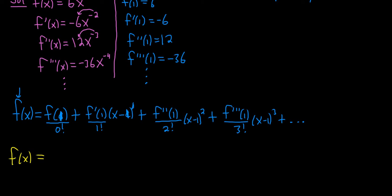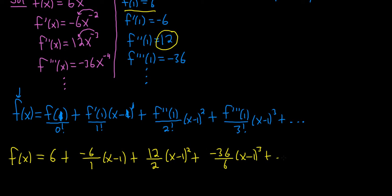So here's where we're going to hope to find a pattern. f of 1 is 6, so it'll be 6 plus f prime of 1 is negative 6, so it'll be negative 6 over 1 factorial times x minus 1 to the 1. f double prime of 1 is 12, so plus 12 over 2 factorial times x minus 1 to the 2. Plus f triple prime is negative 36 over 3 factorial times x minus 1 to the 3, plus dot dot dot.